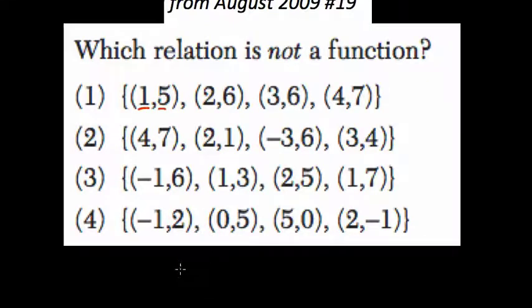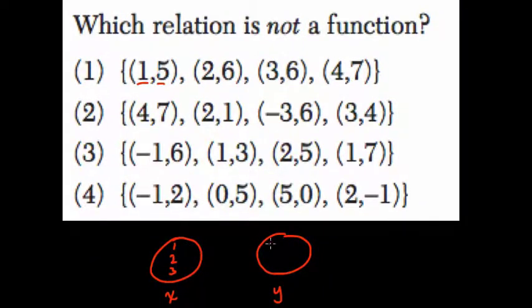Now, a function, if you remember, means that if you map out every domain value—let's say 1, 2, and 3 are your domain values—when you map them to the range, a function tells you that every input maps to one output.